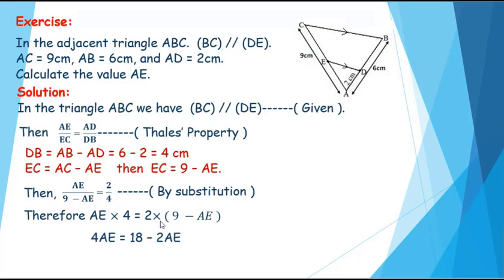We take minus 2AE to the left side, then 4AE plus 2AE equals 18. So 6AE equals 18. Then AE equals 18 over 6, which equals 3 cm.